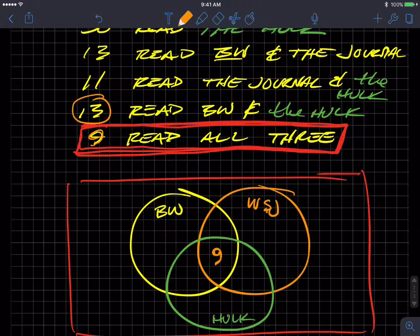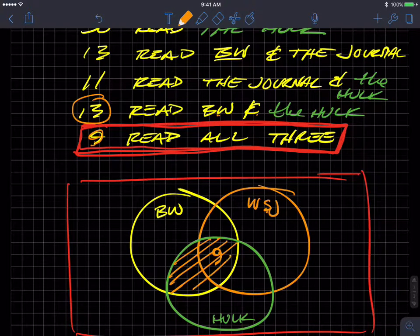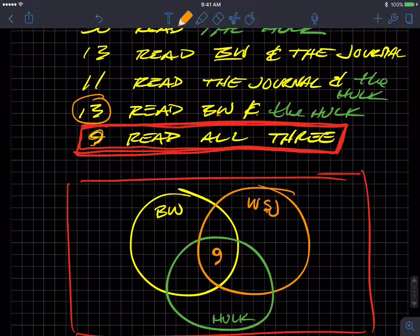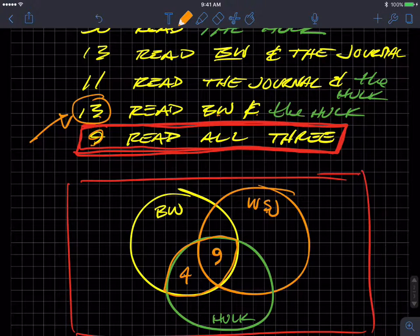So let's do this in 13. 13 read Business Week and the Hulk. So that means it's this region here. 13 people exist in this little football that's both Business Week and the Hulk. But we already have nine in there. We have these original nine that were all three. So 13 minus nine, that means there's four people out here. So that there are still nine in the center, but only four out here to make it so that this little football only has a total of 13.